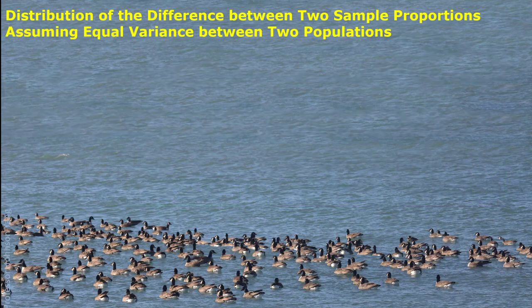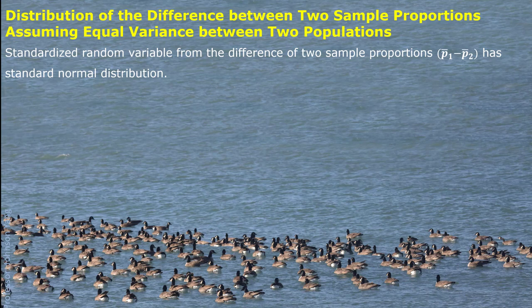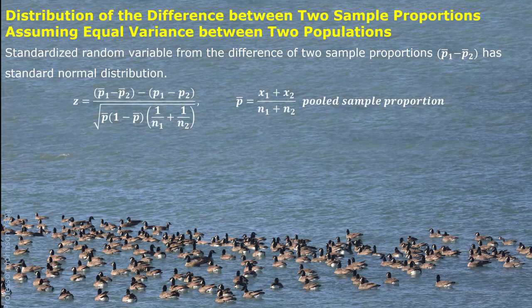In the similar condition, if we can assume two populations have equal variance, then we can pool our sample data together. In this case, the standardized random variable of the two sample proportions still has a standard normal distribution, but the calculation is simpler. The pooled sample proportion is used — once we mix the two sample values together, we can easily get the pooled sample proportion from the combined counts.